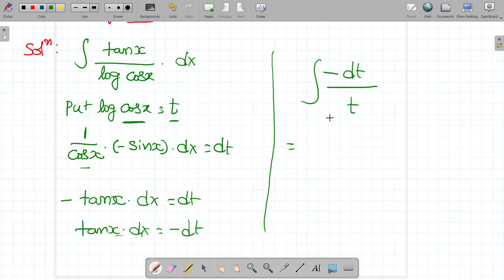Equal to minus of integral 1 by t dt. Equal to minus of log t plus constant of integration. So minus of log, what is the value of t? t value is log cos x plus constant of integration.